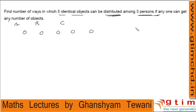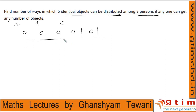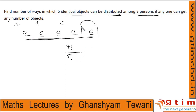Let's follow a different logic. Suppose the 5 objects are balls and the 2 partitions are plates. We arrange all 7 objects — 5 identical balls and 2 identical partitions — together. Number of ways to arrange these 7 objects = 7! / (5! × 2!) = 7C2 = 7×6/2 = 21 ways. Each arrangement corresponds to a unique distribution. So there are 21 ways to distribute five identical objects among three persons if anyone can get any number.